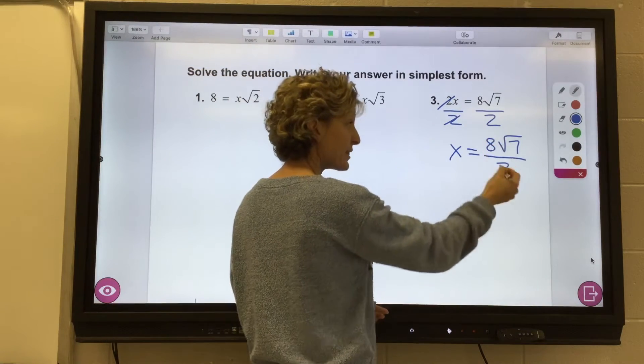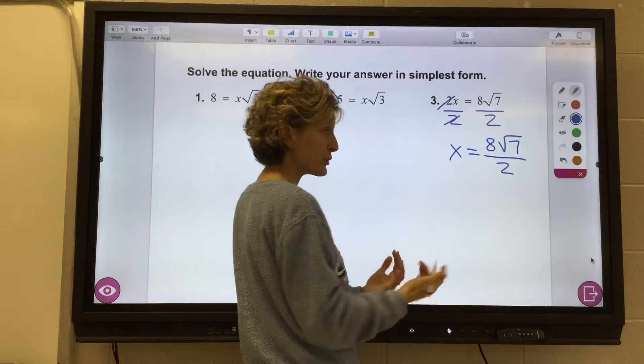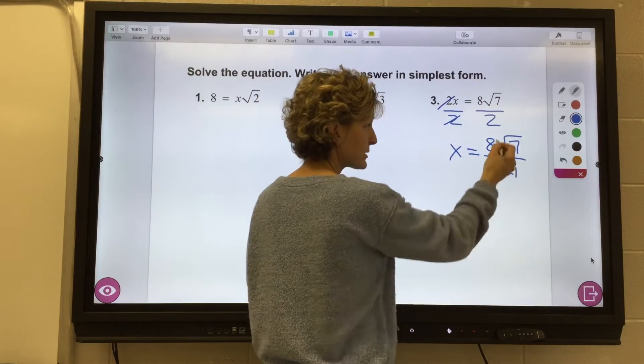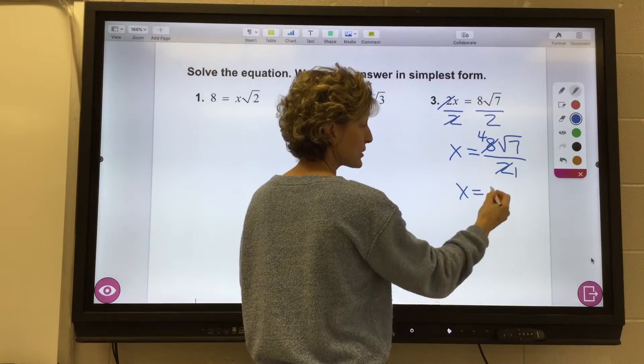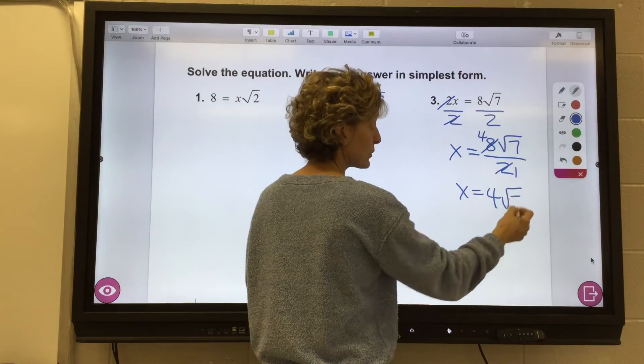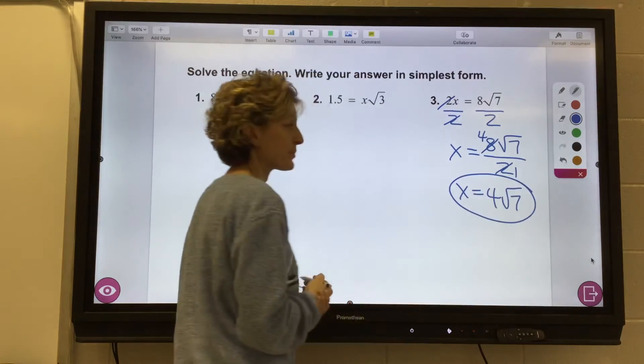And so I can simplify this as if it was just 8 over 2. 2 goes into itself once, and 2 goes into 8 4 times. So my answer is 4 times the square root of 7. All right?